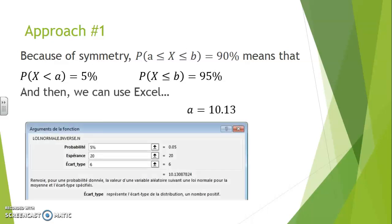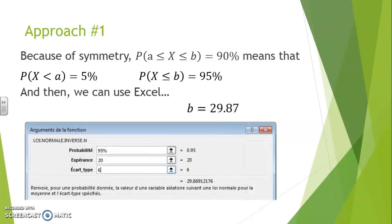And then we can use Excel to find those individual bounds. We specify that the bound left of which we wish to conserve 5% is what we are trying to obtain to get the a. And then we specify that 95% is the probability of the value left of which we're looking to find.